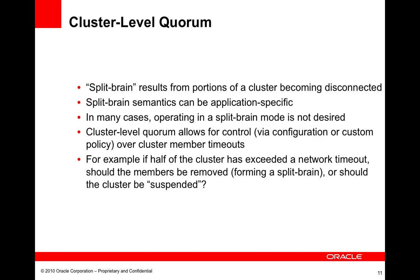Coherence will go into what we call a split brain mode, where each surviving side of the cluster will survive on its own. It will decide that the other five machines are gone. Each rack will continue running in isolation — they'll each think that the other side is dead — and we call this a split brain because now we have really two sources of truth.